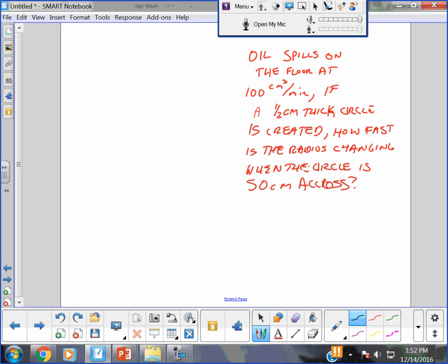So, you have black oil spilling down at 100 cubic centimeters per minute, slowly oozing into a puddle. But it's not just a puddle. I hope you see because it's a half centimeter thick, it's actually a prism.